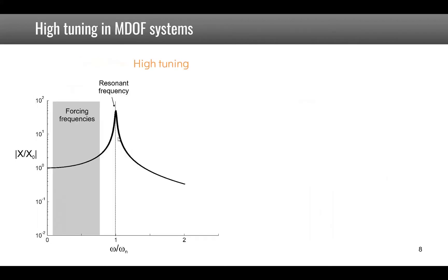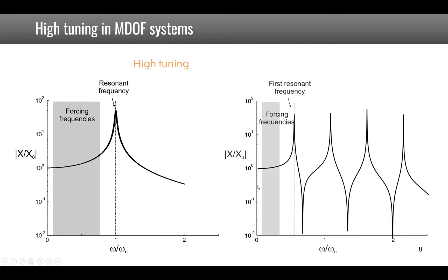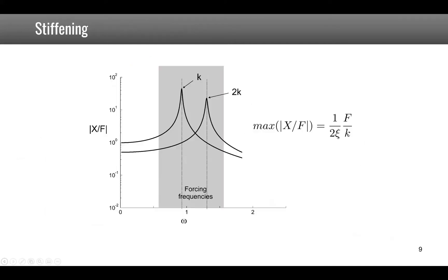So you would have to put all natural frequencies below the forcing frequencies, which might prove impossible. In the case of high tuning, however, if other natural frequencies are higher than the first one and the forcing frequencies are lower than the first resonance, you will be safe with all the mode shapes present in the structure. High tuning will usually be performed by stiffening the structure, and even if you cannot stiffen it enough to exit the forcing frequency band, stiffening will still decrease the resonance.